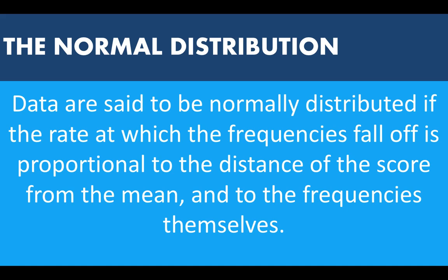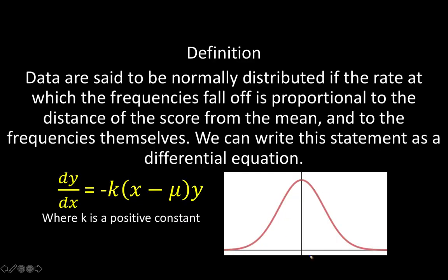For our derivation, let's begin with our idea of what a normal distribution is. We say that data are said to be normally distributed if the rate at which the frequency falls off is proportional to the distance of the scores from the mean and to the frequencies themselves. The x-scores are distributed along the horizontal axis, and the frequency of the score is represented by the height of the curve. For a particular x value, say x sub 1, there is a corresponding frequency denoted by y sub 1.